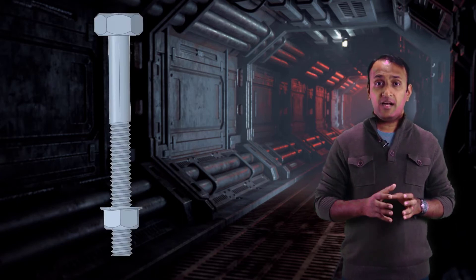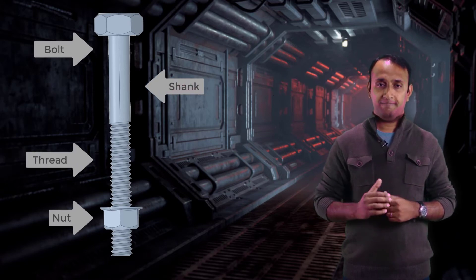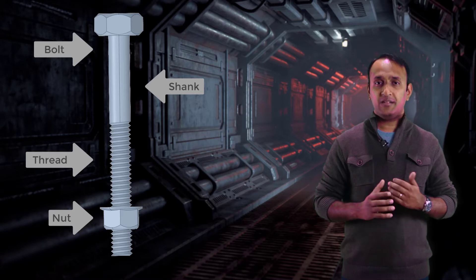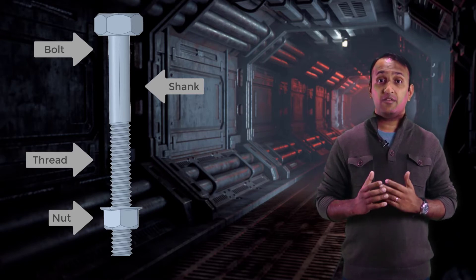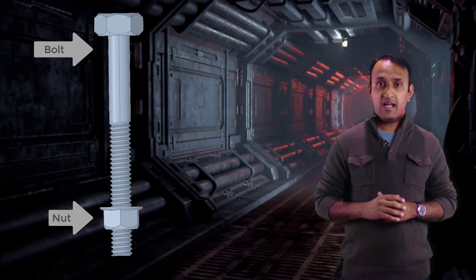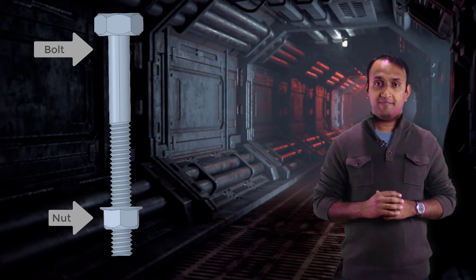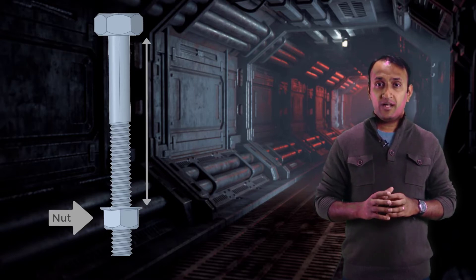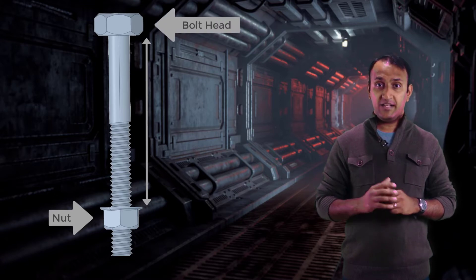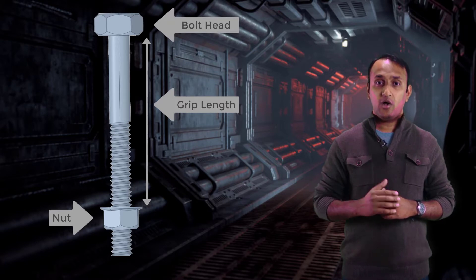Before diving into the mechanics of bolted joints, let's spend some time to learn the structure of a bolt-nut assembly and the nomenclature. The nut and the bolt are the two main components that engage via threads cut into them. The interaction between the threads is where they transfer forces from one another. The nut and bolt heads are two surfaces between which the mating components are sandwiched. The portion of the bolt between the nut and the bolt heads is called the grip length, and this is the load-bearing portion of the bolted joint.